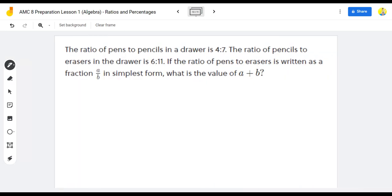The ratio of pens to pencils in the drawer is 4 to 7. The ratio of pencils to erasers in the drawer is 6 to 11. If the ratio of pens to erasers is written as a fraction in simplest form, what is the value of A plus B?